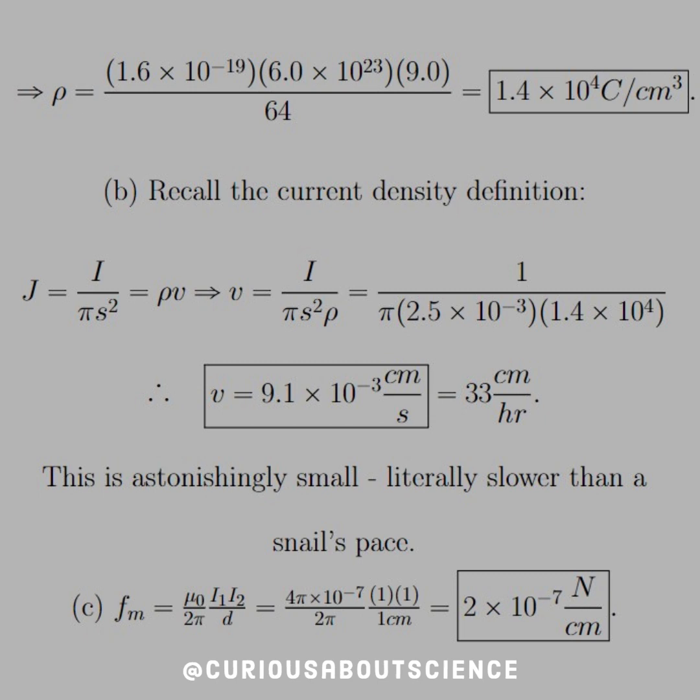Now for C, we know that we already found the force per unit length of two wires in the text, so we know that that's equal to mu naught over 2 pi, I1 times I2 over D. Plug them all in, and we get 2 times 10 to the negative 7 newton per centimeter.